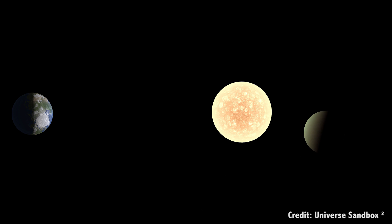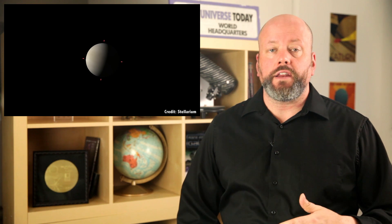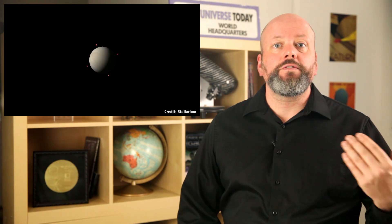The opposite happens when it's on the other side of the Sun. It would be fully illuminated from our perspective. Too bad we can't see it in all that glare. But when Venus is on either side, this is when we can finally see it, and our perspective changes. We're seeing more and more of the planet illuminated, and less in shadow. We see phases.